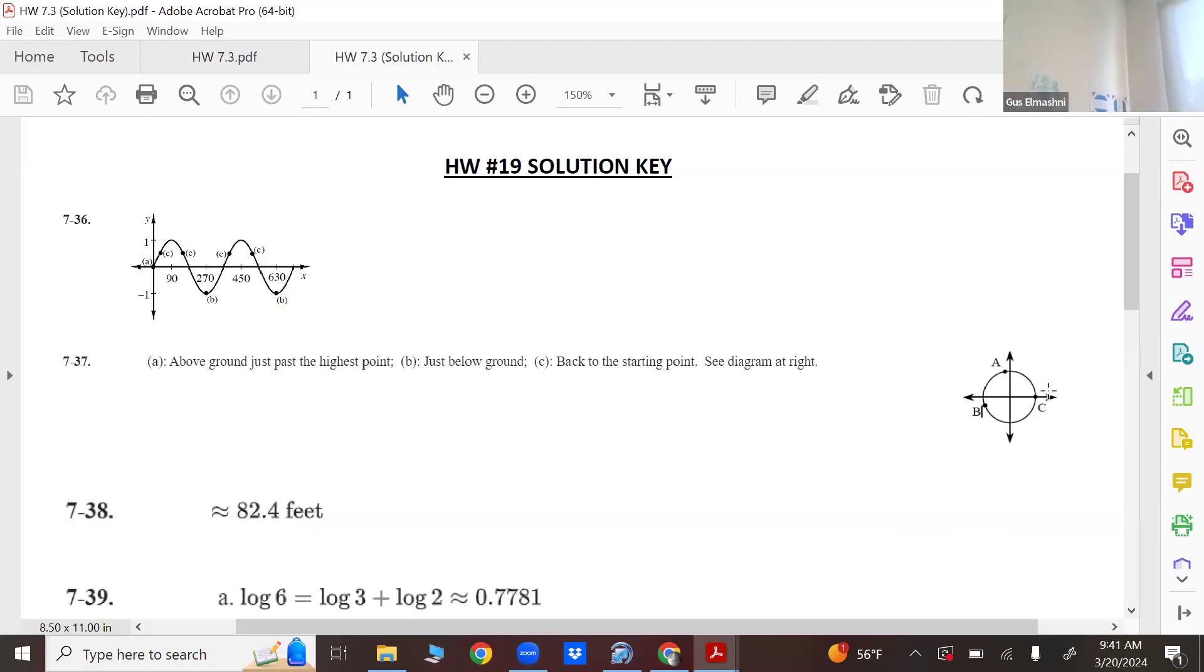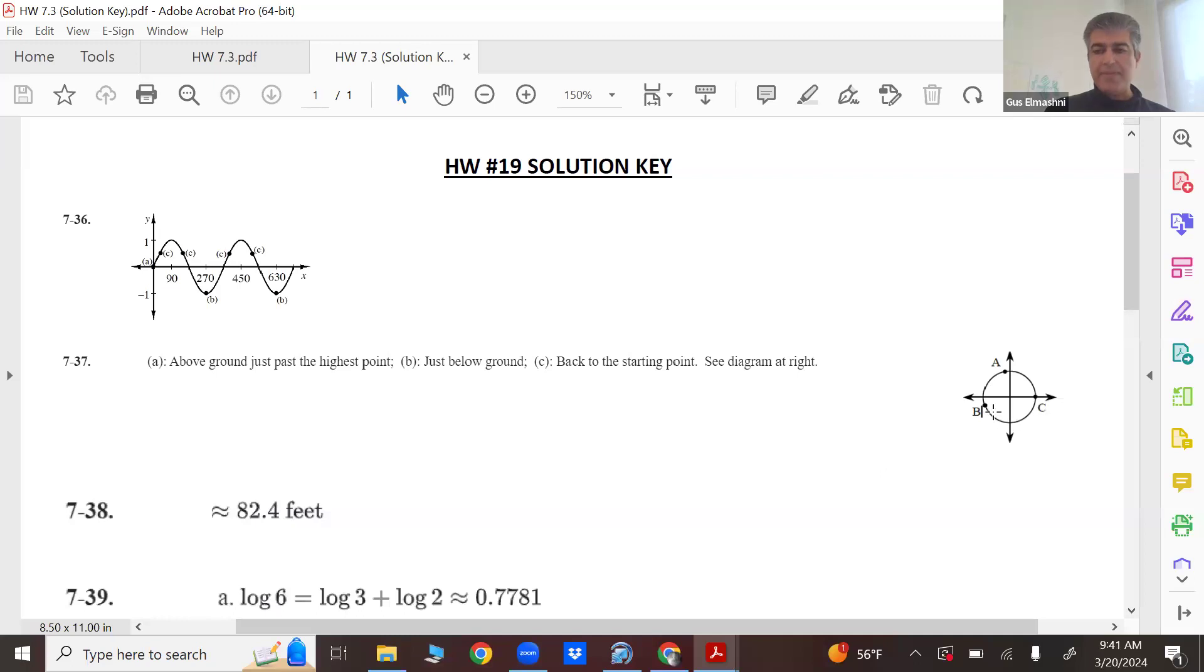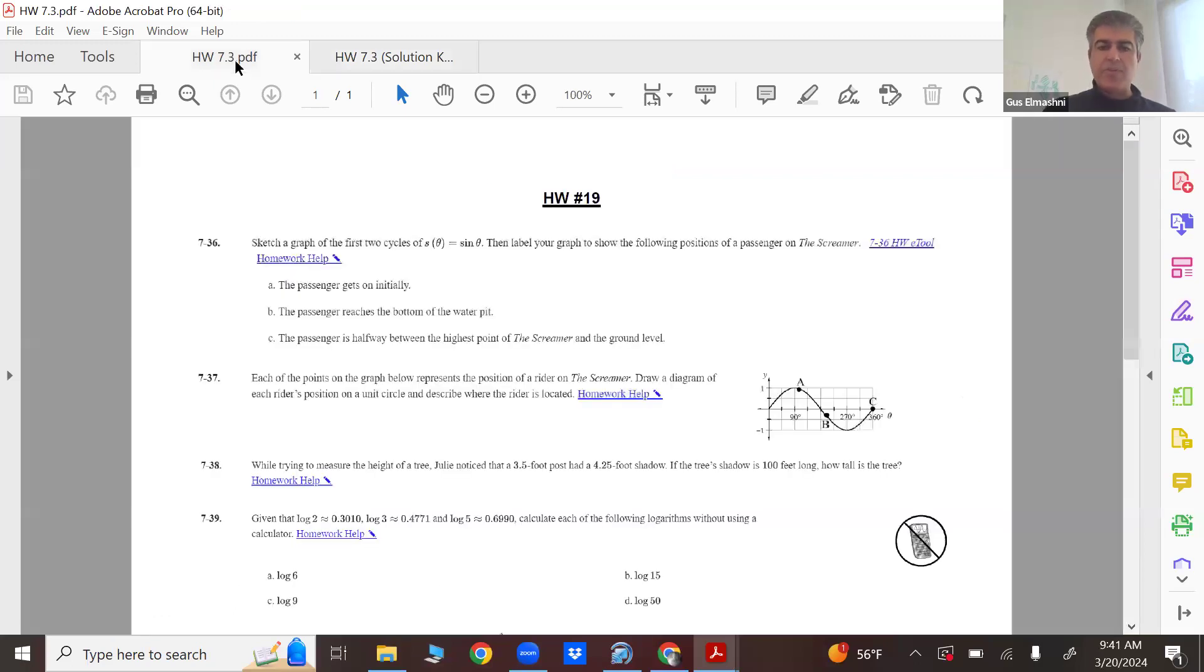So you're a little past the peak. And remember, you board it at C, and you go counterclockwise. Because that's how the ride works, right? You board it at zero degrees, which is the positive x-axis. You go counterclockwise, so A would be right there when you're past 90 degrees.